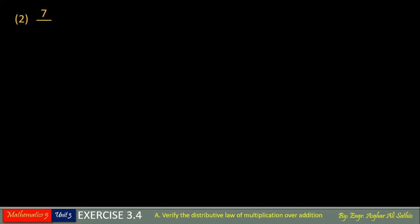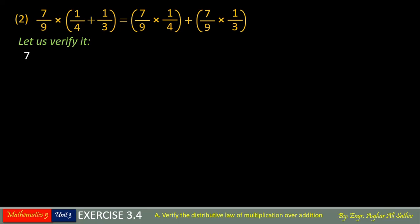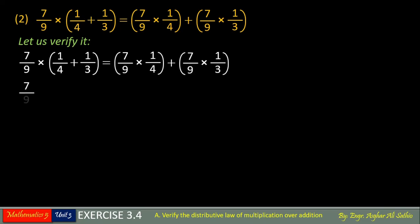Now problem number 2 of the same question. The value we have — so let us verify it. First of all, 7 upon 5 — we write the same value in the solution. 7 upon 5, here you have to find LCM of 4 and 3. The LCM will be 12.